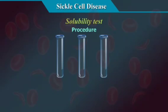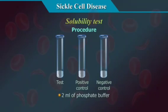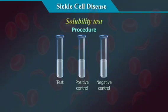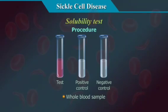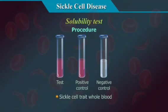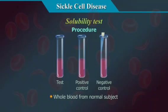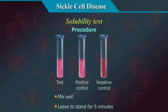Procedure: Take 3 test tubes marked test, positive control, and negative control. Add 2 ml of phosphate buffer to all 3 test tubes and allow to reach room temperature. Add 20 µl of whole blood sample from the patient to the test tube, 20 µl from a known sickle cell trait to the positive control, and 20 µl from a normal subject to the negative control. Mix well and leave to stand for 5 minutes.